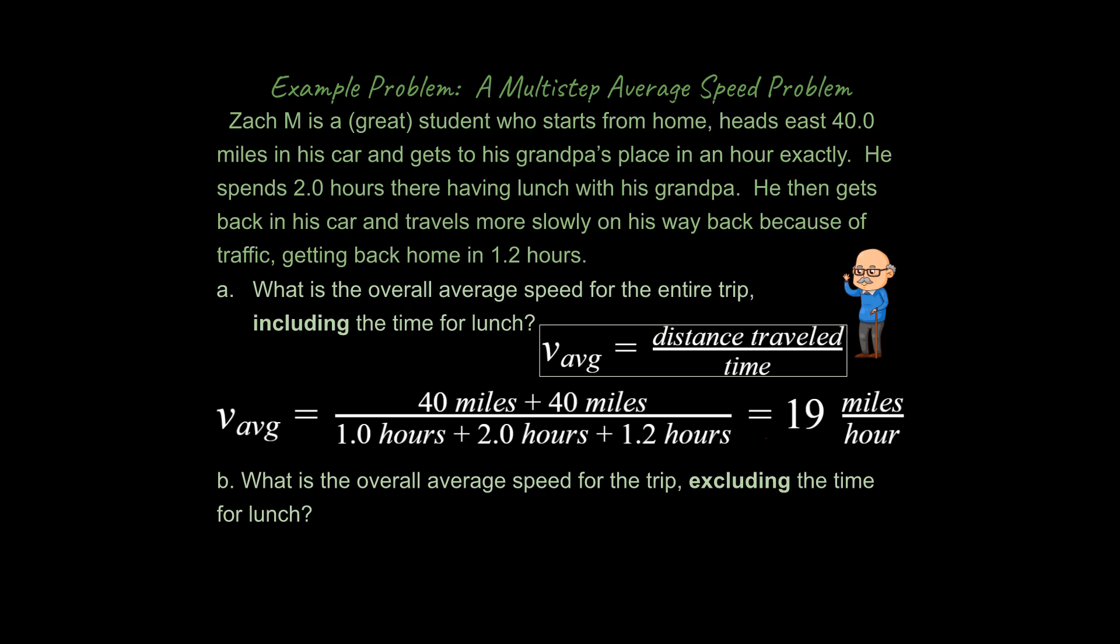Well, if the problem wants to exclude the time for lunch, how would you change that? You would change that by simply getting rid of the two hours here. You would do the same calculation without the two hours, but get a very different result. If you're just looking at his traveling, he's going to end up with 36 miles an hour overall.